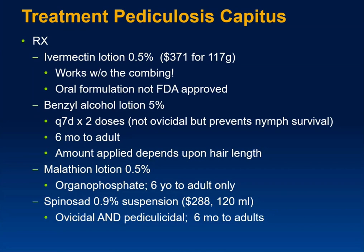Prescription options include ivermectin lotion, which is expensive but works without combing. The idea of combing is to remove nits that may contain live larvae — source control. The oral formulation of ivermectin is not FDA-approved to treat pediculosis capitis. Benzyl alcohol lotion is given every seven days for two doses; it's not ovicidal, but may prevent nymphs from surviving after hatching. Age range is six months to adulthood.